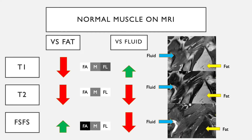What is normal muscle on MRI? We contrast it with fat and fluid. On T1 weighted images, fat is bright, fluid tends to be slightly dark, and muscle sits somewhere in between the two. On T2 weighted images, both fat and fluid are bright, and muscle is slightly darker.